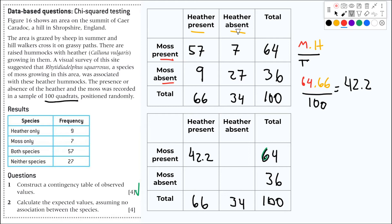Let's see another example. This one, this is moss present, that's still 64, but the heather now is absent. Heather absent is 34. 34 divided by the grand total of 100, that is 21.8. You do the same for the other ones. That'll be 23.8 and here we have 12.2.